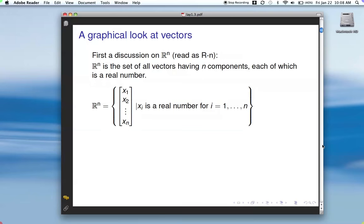From a set point of view, you can look at it like this, set notation. All vectors look like this, n components, where each one of them is a real number.